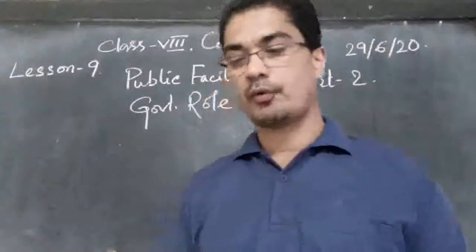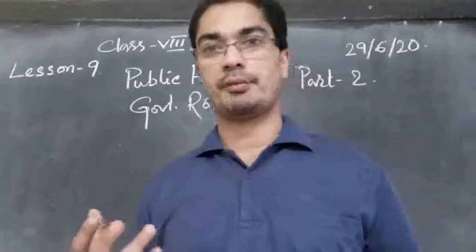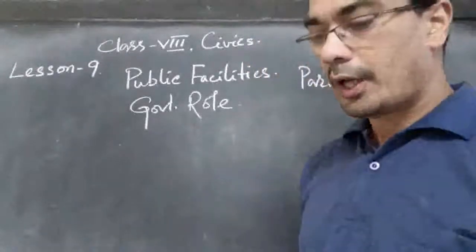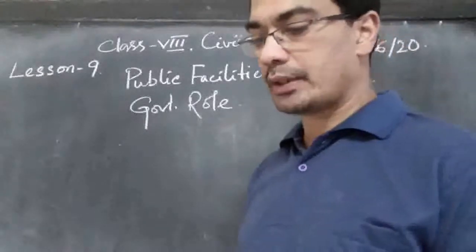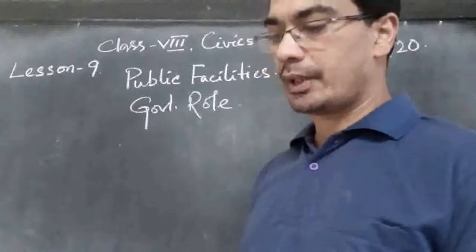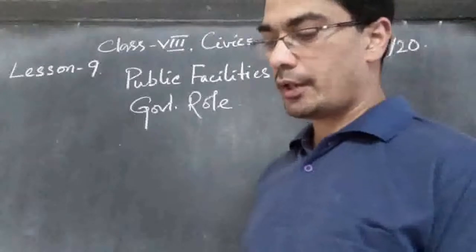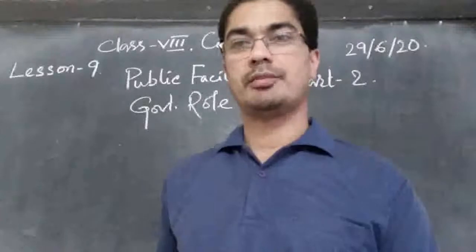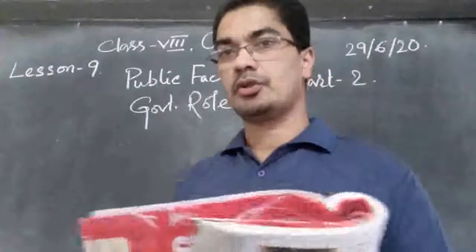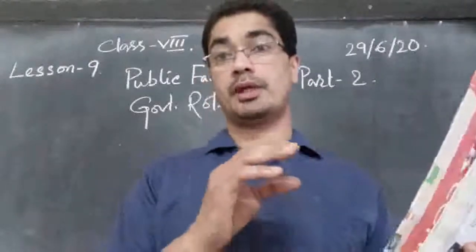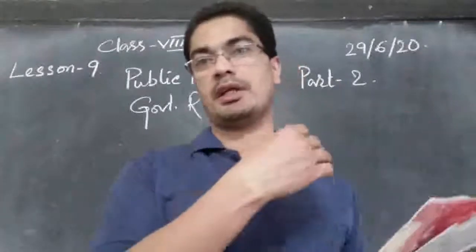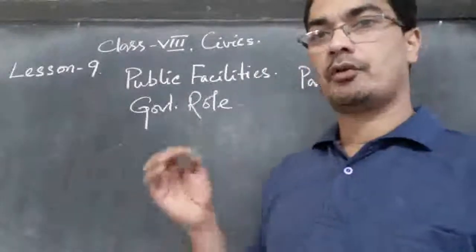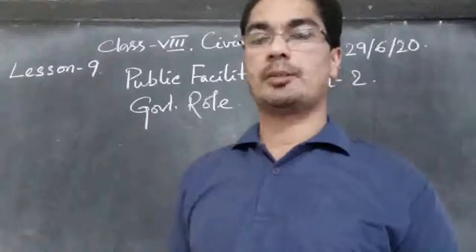It is the duty and responsibility of the government to provide all these things, but it requires a lot of money since the government does not get much profit back. Every year the government budget is presented in parliament. This is an account of the expenses the government has made on its programs in the past year and how much it plans to spend in the coming year. The budget explains how much money was collected from the people through taxes, how it was spent, and what the government plans for the coming year.